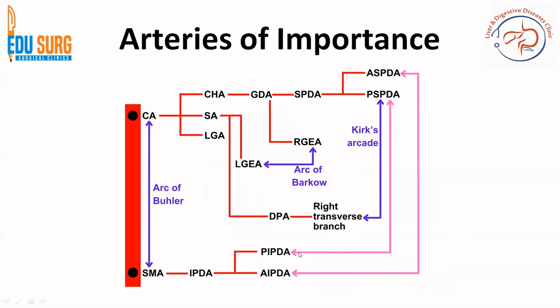In this diagram, the lines in purple represent arcades that are always present, while lines in blue represent commonly asked exam questions. The red represents the abdominal aorta, showing the origins of the celiac axis and the superior mesenteric artery. If the schematic is unclear, refer to the playlist videos on branches of the abdominal aorta. The GDA, the gastroduodenal artery, arises from the common hepatic artery.